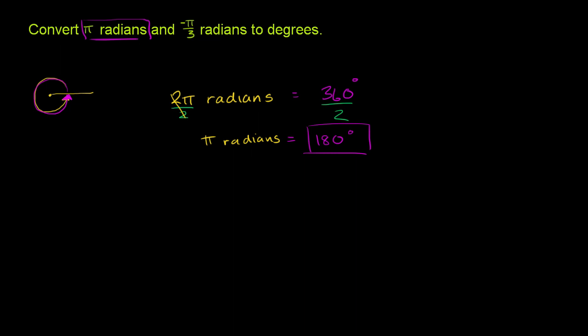And if you want to think about it, we know π radians are halfway around a circle. Halfway around a circle like that. And that's the same thing as 180 degrees.